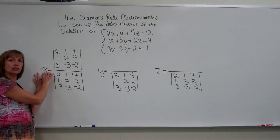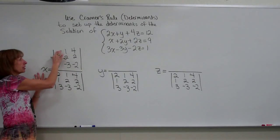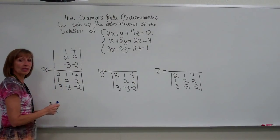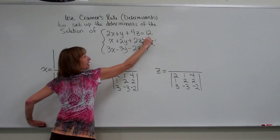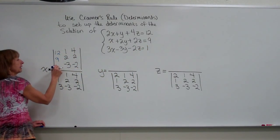Then look at which variable you're creating the numerator for. So for the variable x's numerator determinant, I take out the coefficients of x and I replace that column with the constants from the other side of the equation. So with 12, 9, and 1.